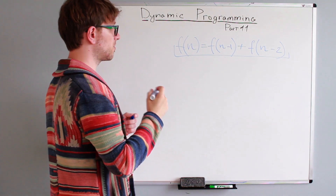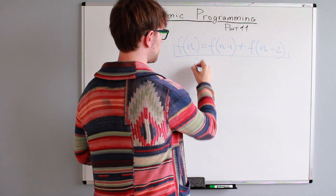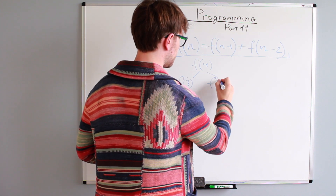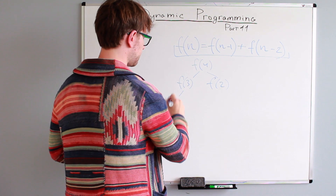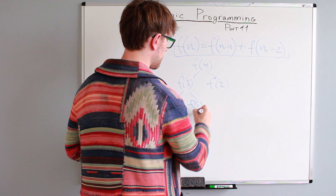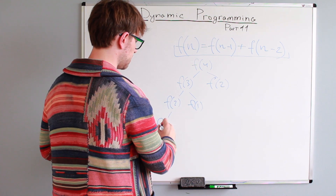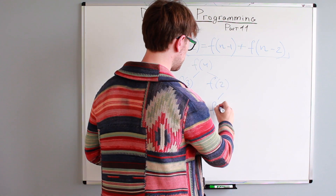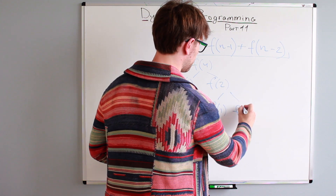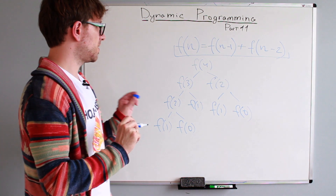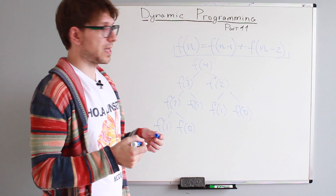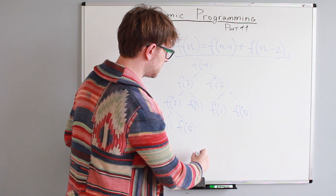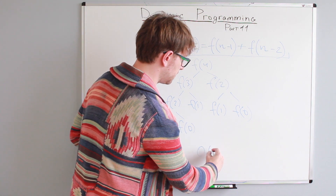Let's take a look at the recursion tree when we solve Fibonacci of 4. To solve F(4), we need F(3) and F(2). To find F(3), we need F(2) and F(1). To find F(2), we need F(1) and F(0). And to find F(2) on the other branch, we again need F(1) and F(0). This is how a regular recursion tree for Fibonacci(4) looks. The problem is that the runtime complexity is exponential — O(2^N).